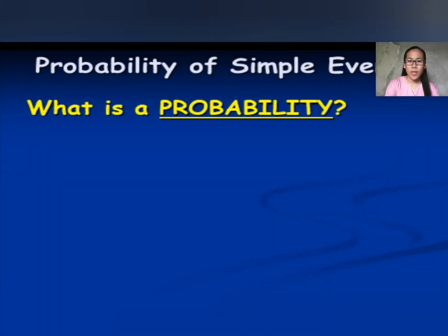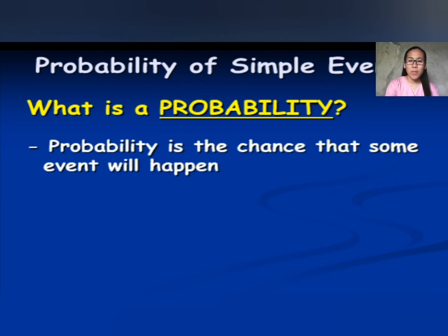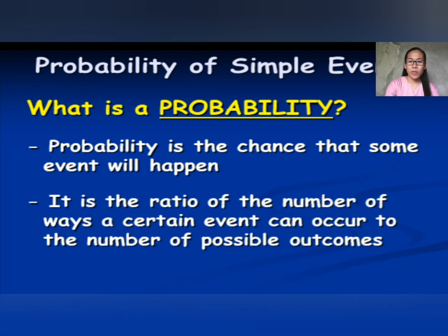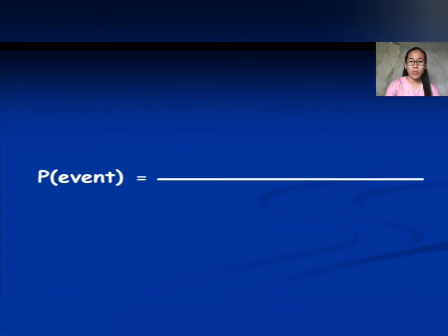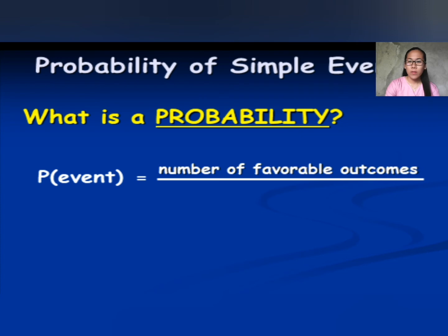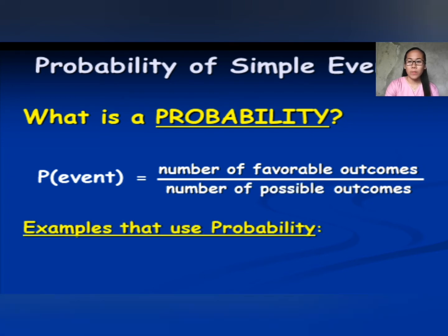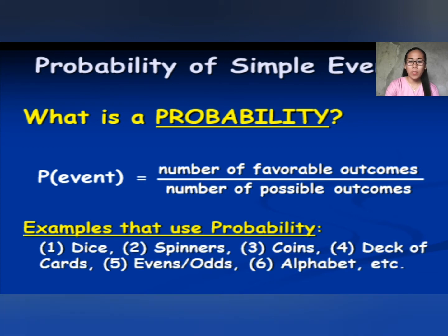What is probability? Probability is the chance that some event will happen. It is the ratio of the number of ways a certain event can occur to the number of possible outcomes. So the probability of an event equals the number of favorable outcomes divided by the number of possible outcomes. Examples that use probability include dice, spinners, coins, deck of cards, events, odds, and alphabet.